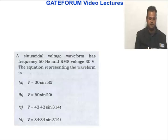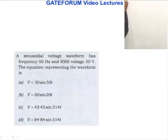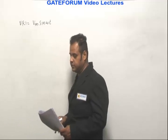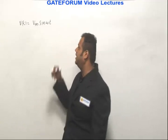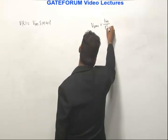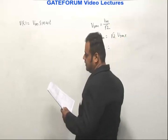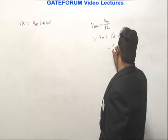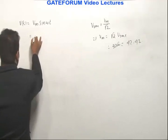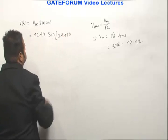A sinusoidal voltage waveform of frequency 50 Hz and RMS voltage 30 volts — the equation of the waveform is which of the following? The standard form is Vm sin(ωt). Vm is the peak value. The relation between peak and RMS is V_RMS = Vm/√2, so the peak amplitude is √2 × V_RMS = 30√2 ≈ 42.42 V. So the equation is 42.42 sin(2π × 50 × t).